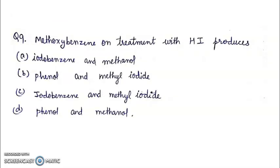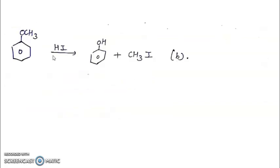Question 9: Methoxybenzene on treatment with HI produces: A. Iodobenzene and methanol, B. Phenol and methyl iodide, C. Iodobenzene and methyl iodide, D. Phenol and methanol. The correct answer is B. Methoxybenzene's reaction with HI will cleave to form phenol plus CH3I.